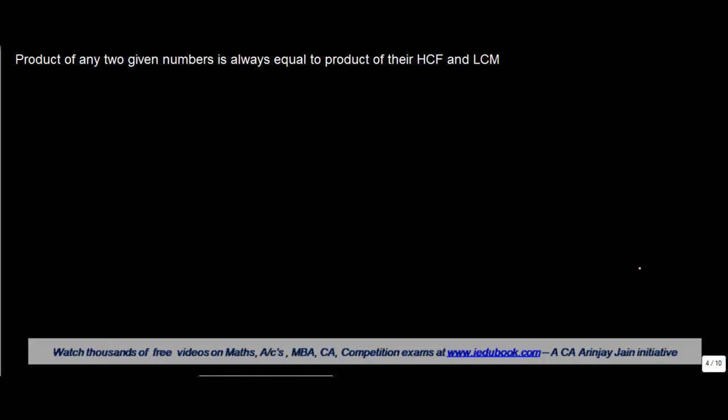Now, this is one of the most important properties for HCF and LCM. This property says that product of any two given numbers, if you have any two numbers, let us say X and Y, is always equal to the product of their HCF and LCM. So X times Y equals HCF of X and Y times LCM of X and Y.